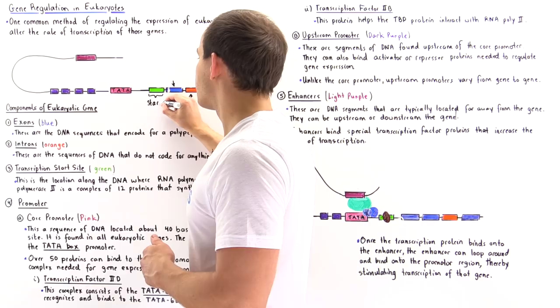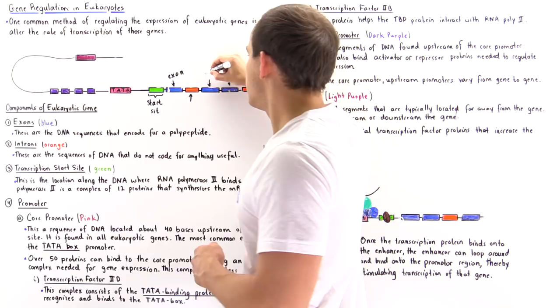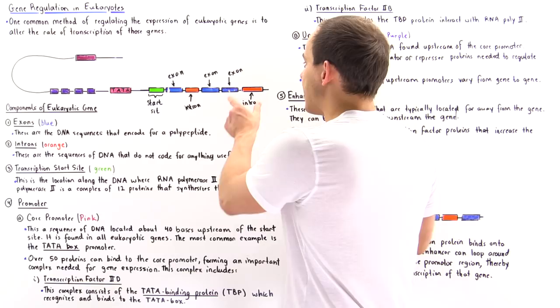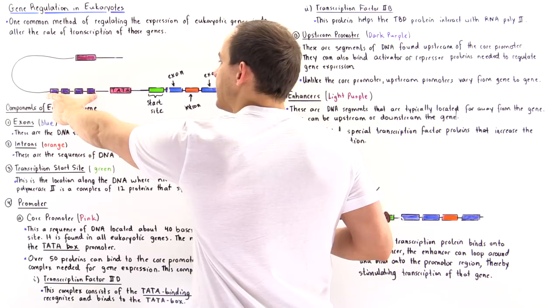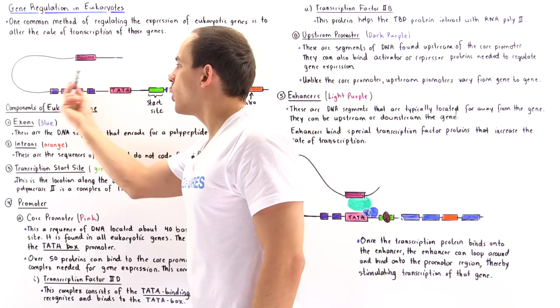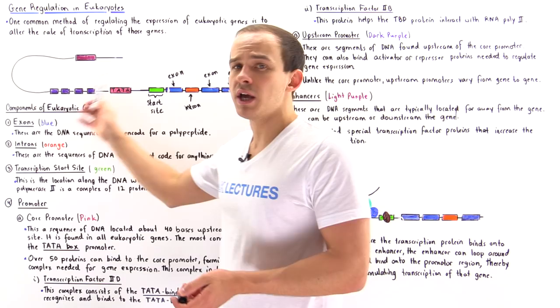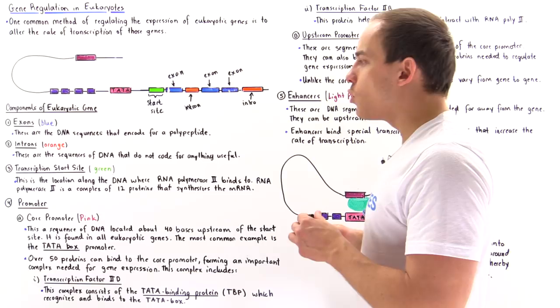So we have our transcription start site, exon one, exon two, exon three, intron one, and intron two. Together, the remaining region is known as the promoter. Just like operons in prokaryotic cells contain promoters, so do these eukaryotic genes — but the promoters of eukaryotic genes are much more complex.